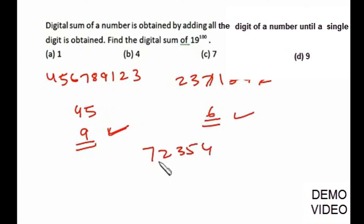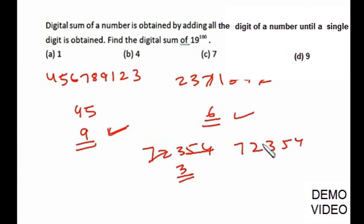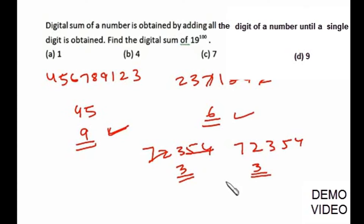Another example: for 72354, cancel pairs summing to 9 — we are left with 3. So the digital sum is 3. Alternatively, 7+2+3+5+4: 7+2=9, 9+3=12, 12+5=17, 17+4=21, and 2+1=3. Both methods confirm the digital sum is 3. So the digital sum concept is simply the remainder when dividing by 9.